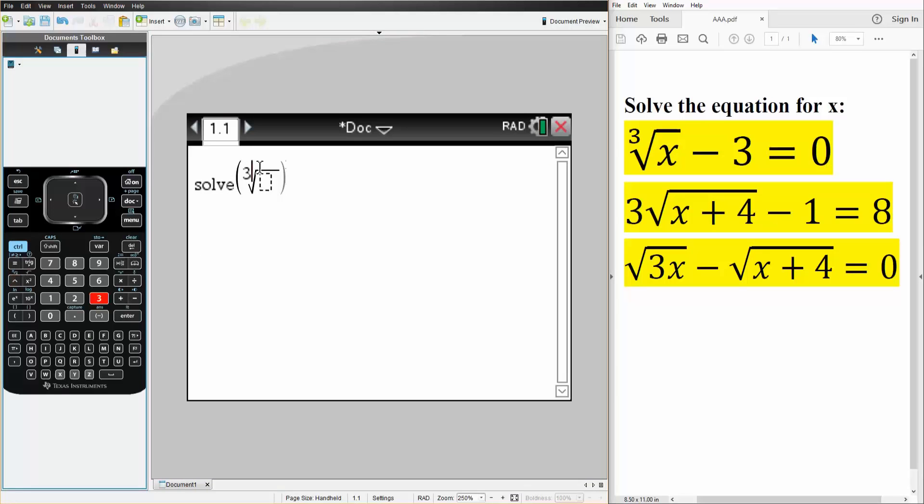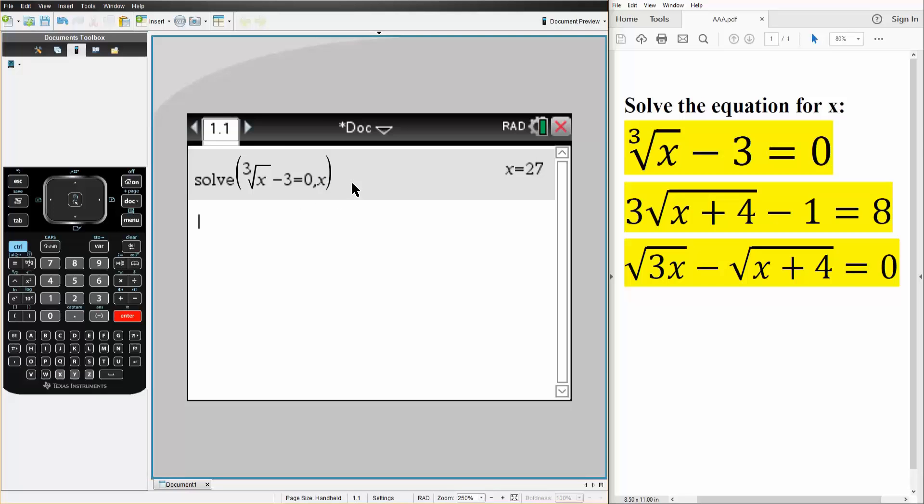And so we have a 3, and inside is x, minus 3 is equal to 0. The important step next is write comma x. We are solving for x, so comma x like this, and we hit Enter. And so the value of x is 27.